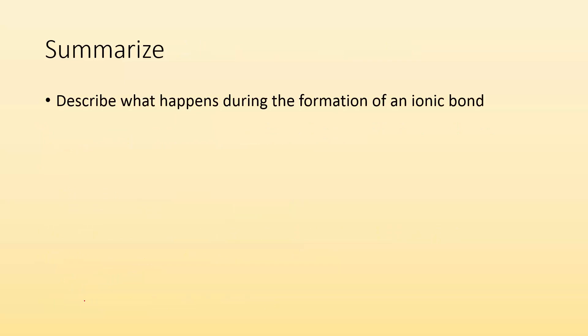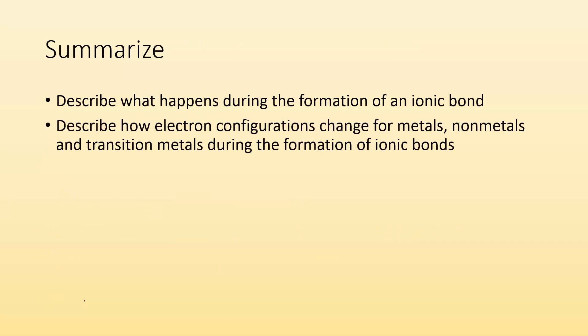So summarize. Describe what happens during the formation of ionic bonds and describe how electronic configurations change for metals, non-metals, and transition metals during the formation of ionic bonds. Hope you found that helpful. See you in class.